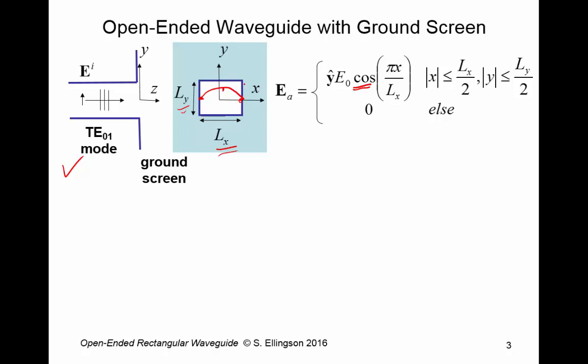In the y dimension, it's just uniform. So as you go from one end of the aperture to the other end of the aperture this way, the magnitude is uniform. As you go left to right here, it goes from zero to a maximum to a minimum. And this is the TE01 mode.